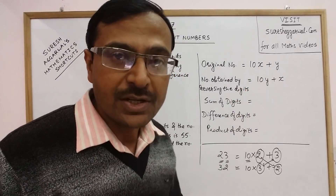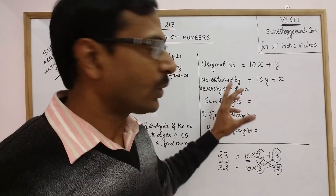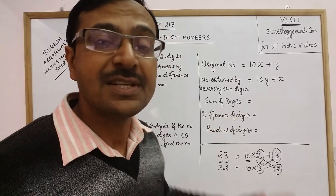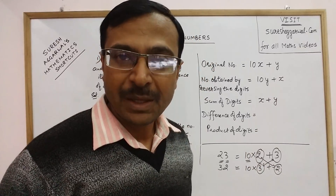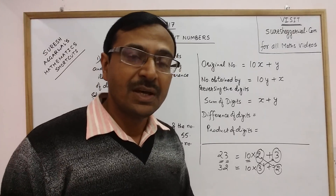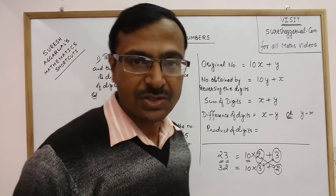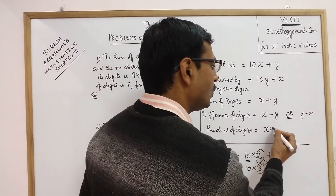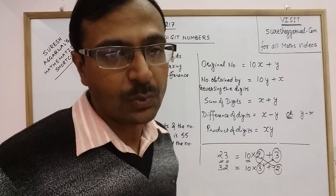Remember, 10x is not a digit — 10 comes because x lies in the tens place. The digits are only x and y. So if a problem mentions the sum of digits, that sum is only x plus y. The difference of digits is x minus y or y minus x depending on which digit is greater. Similarly, the product of digits is x into y. These are the key assumptions for solving statement problems on linear equations in two variables.